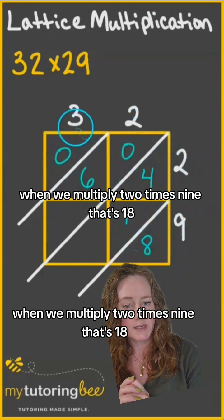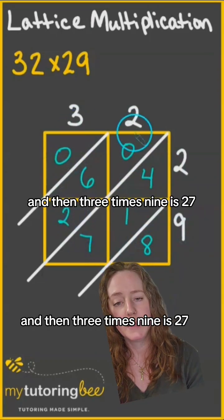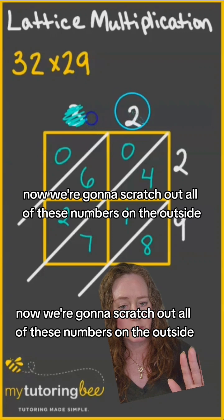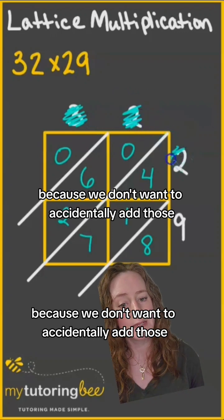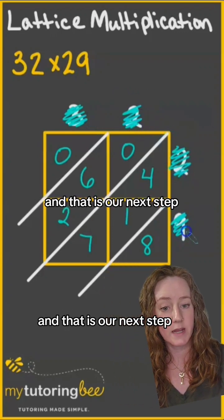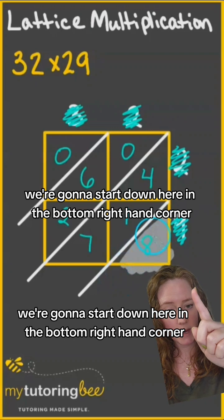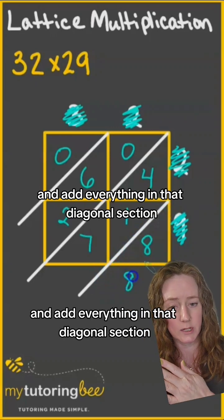When we multiply 2 times 9, that's 18, and then 3 times 9 is 27. Now we're going to scratch out all of these numbers on the outside because we don't want to accidentally add those, and that is our next step. We're going to start down here in the bottom right-hand corner and add everything in that diagonal section.